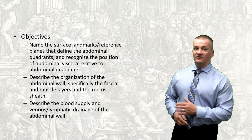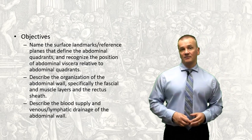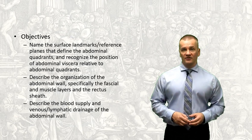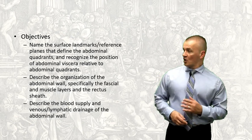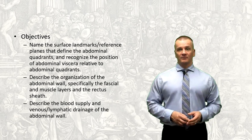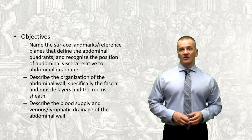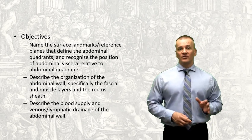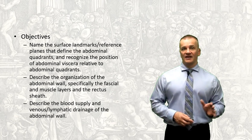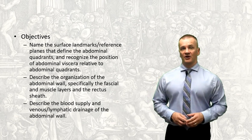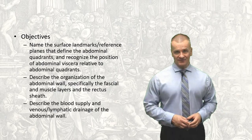For this session, we'll start by looking at the borders defining the abdominal quadrants and identify the viscera found within each. We'll then peel back the layers of the abdominal wall and analyze its structure. We'll finish with a brief look at the blood supply and lymphatics of the anterolateral abdominal wall and discuss their significance in clinical medicine.